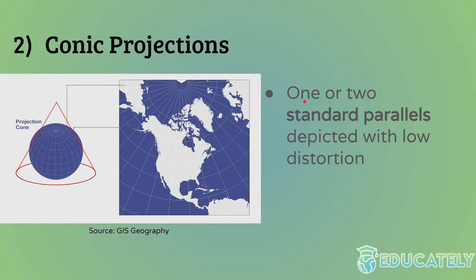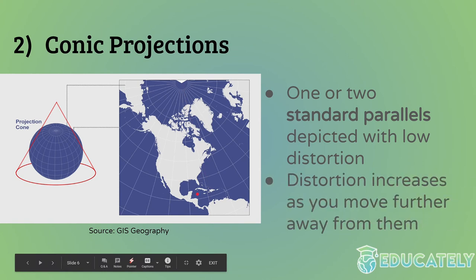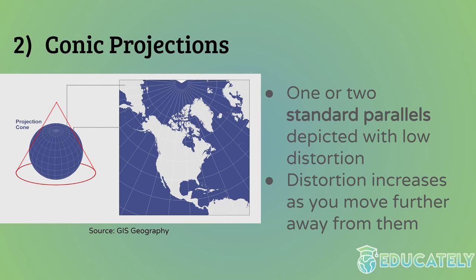There can be one standard parallel if the sphere only intersects the cone once, and two if it intersects twice. Just know that if there are two standard parallels — say this latitude and this latitude — everything between them would be squished, while everything further away would be distorted vertically. Distortion increases as you move further away from the standard parallels.